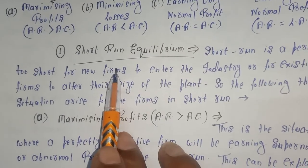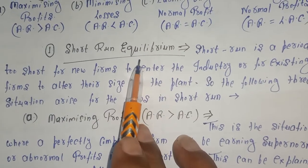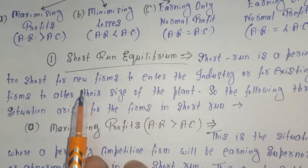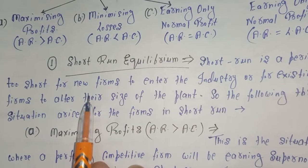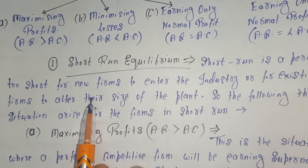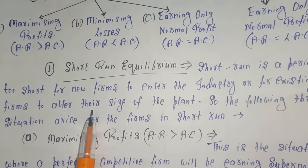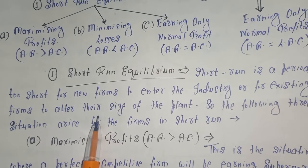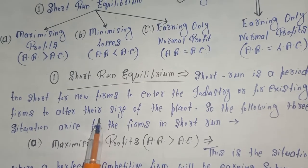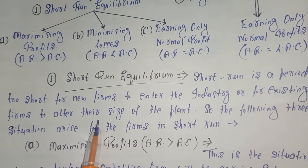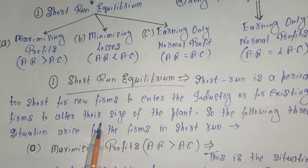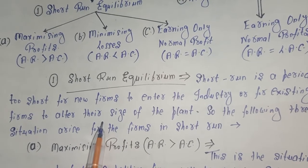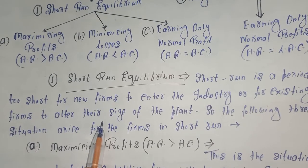In the short run equilibrium of a perfectly competitive firm, as we know, the short run is a period where new firms cannot enter the industry or existing firms cannot alter the size of their plant. So three conditions may arise: some firms earn maximum profits, some incur losses, and some earn only normal profits. Let us discuss these conditions one by one.